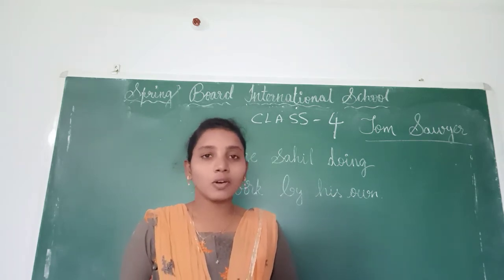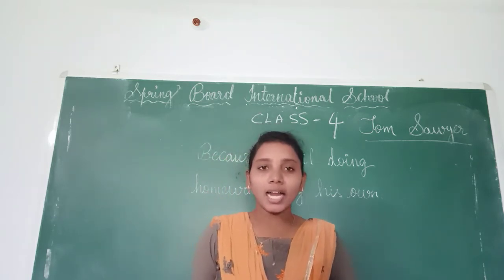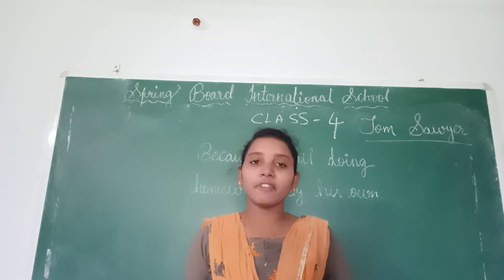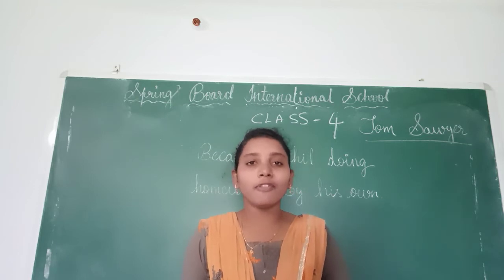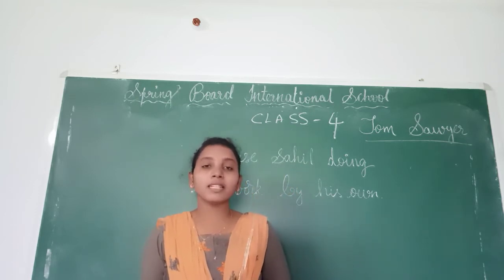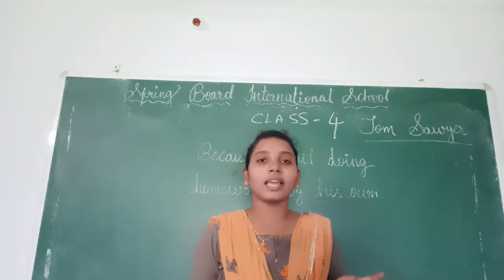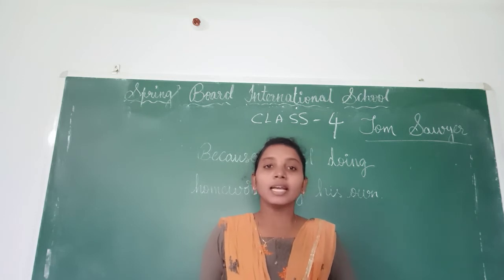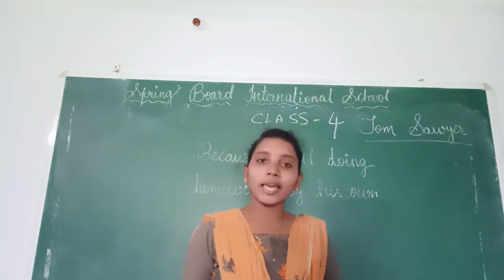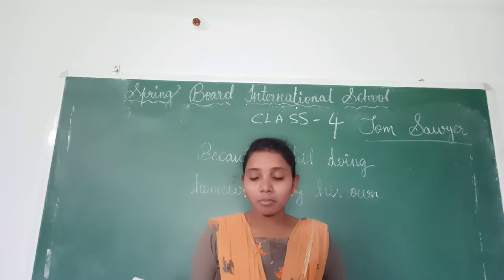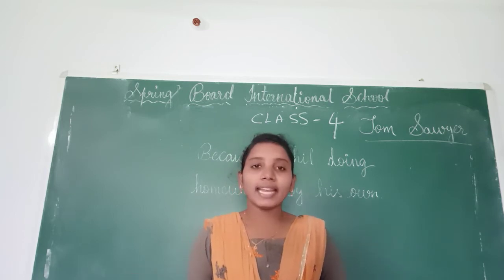Someone is calling Tom — who is calling? Aunt Polly. Aunt Polly is there, another character. Aunt Polly is looking for her nephew. What do you mean by nephew, children? A son of one's brother or sister. That means Aunt Polly has a nephew, and that nephew is Tom Sawyer. He was a young boy of about 10 years of age.